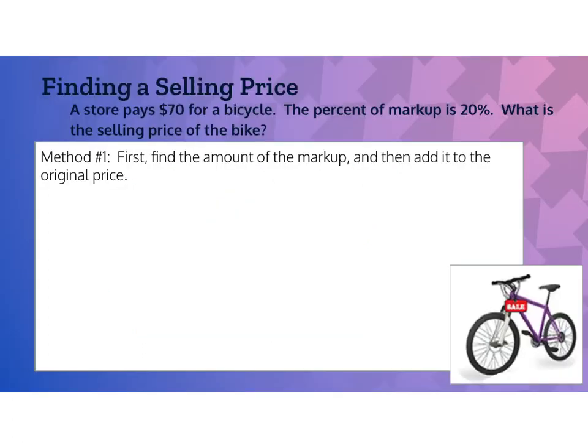The last type of problem in this lesson is finding a selling price when dealing with a percent markup. This is when a store buys something for a certain amount and then sells it for more to make a profit. A store pays $70 for a bicycle, and the percent markup is 20%. What is the selling price of the bike?